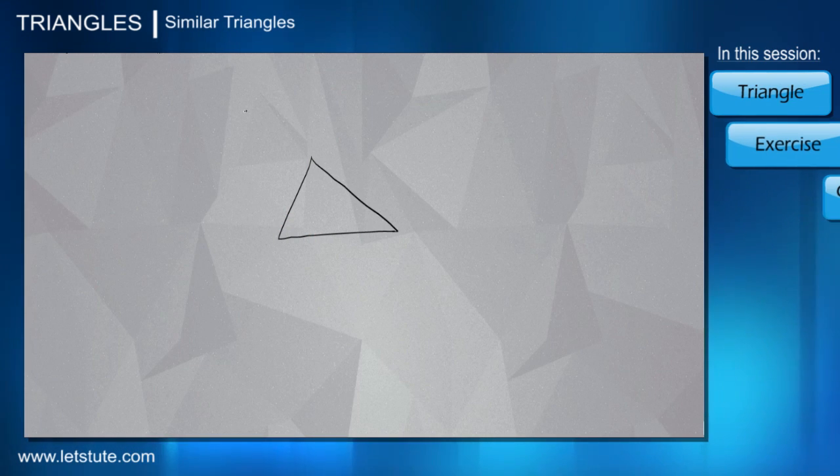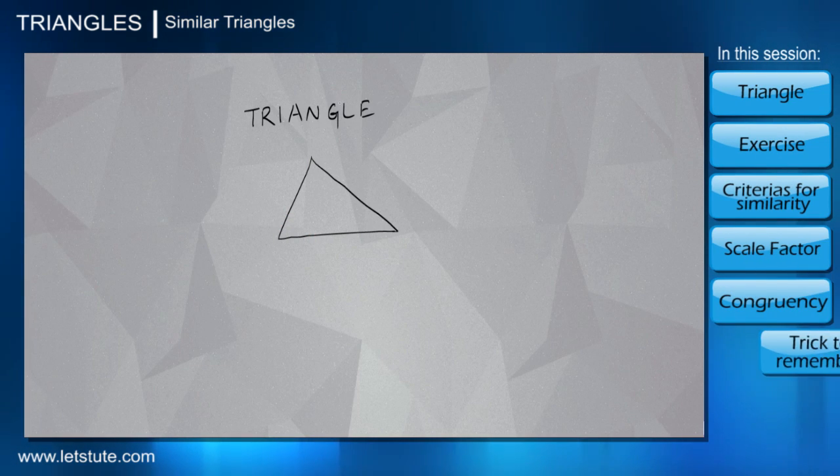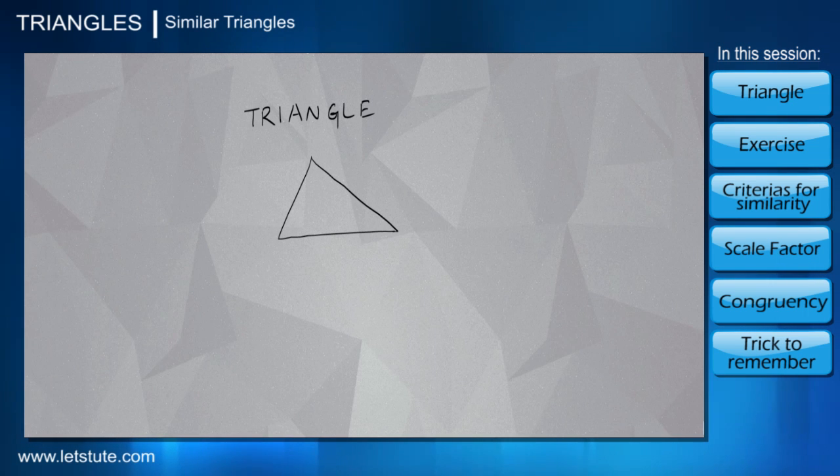The shape that we can see on the screen is called a triangle, and we are quite familiar with the reason. If we split the term triangle, we will get two terms: tri, which means three, and angle, which are these corner areas that we get as a result of two lines intersecting.